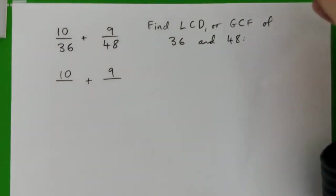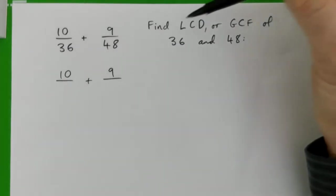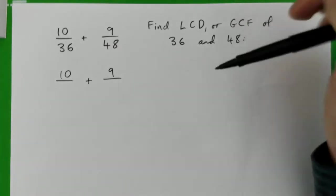In this video we need to find the lowest common denominator or the greatest common factor of 36 and 48. So LCD, lowest common denominator, GCF, greatest common factor.